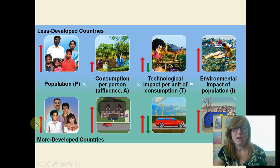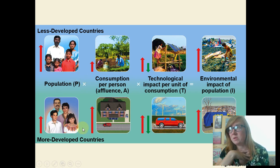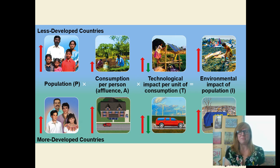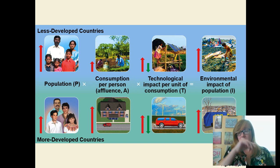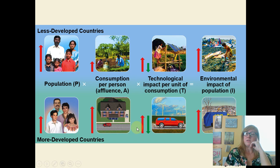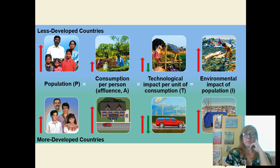In a more developed nation, it might end up being exactly the same environmental impact. More developed nations tend to have people with smaller families, but there's more affluence per person. People want bigger houses, larger cars, more cars, and more stuff. However, they also have better access to technology — hybrid vehicles, wind power — that can decrease environmental impact. So even though technology can bring that number down, the overall environmental impact might end up being similar.